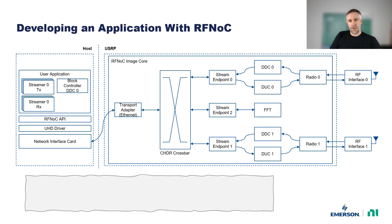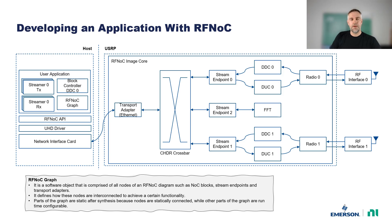We are missing one component that allows us to configure how data is routed through host software. This component is called the RFNOC graph. The RFNOC graph is a software object comprised of all nodes of an RFNOC diagram, such as NOC blocks, stream endpoints, and transport adapters. Parts of the graph are static after synthesis because nodes are statically connected, such as the radio blocks with the DUCs and DDCs. Other parts of the graph are runtime configurable through the chatter crossbar.